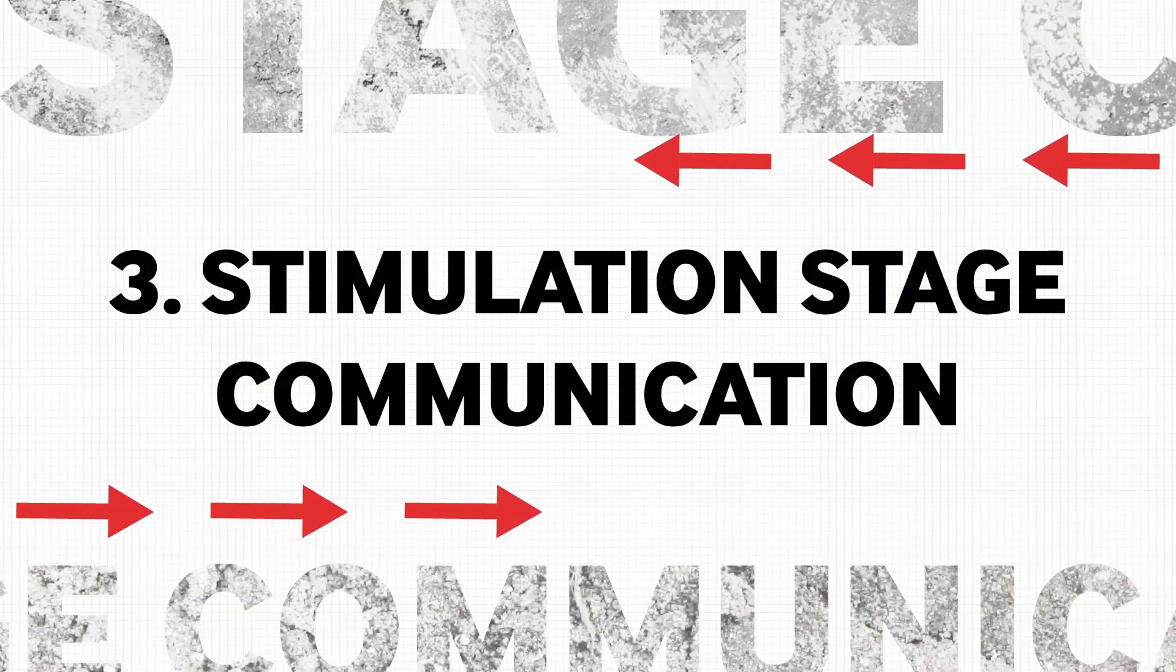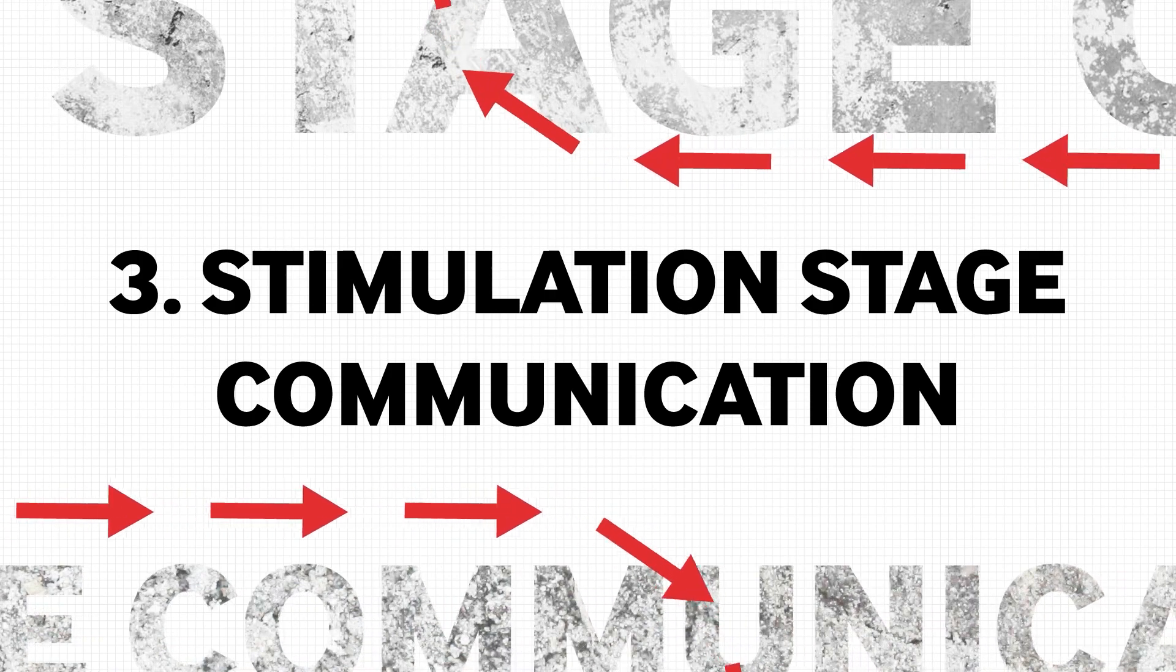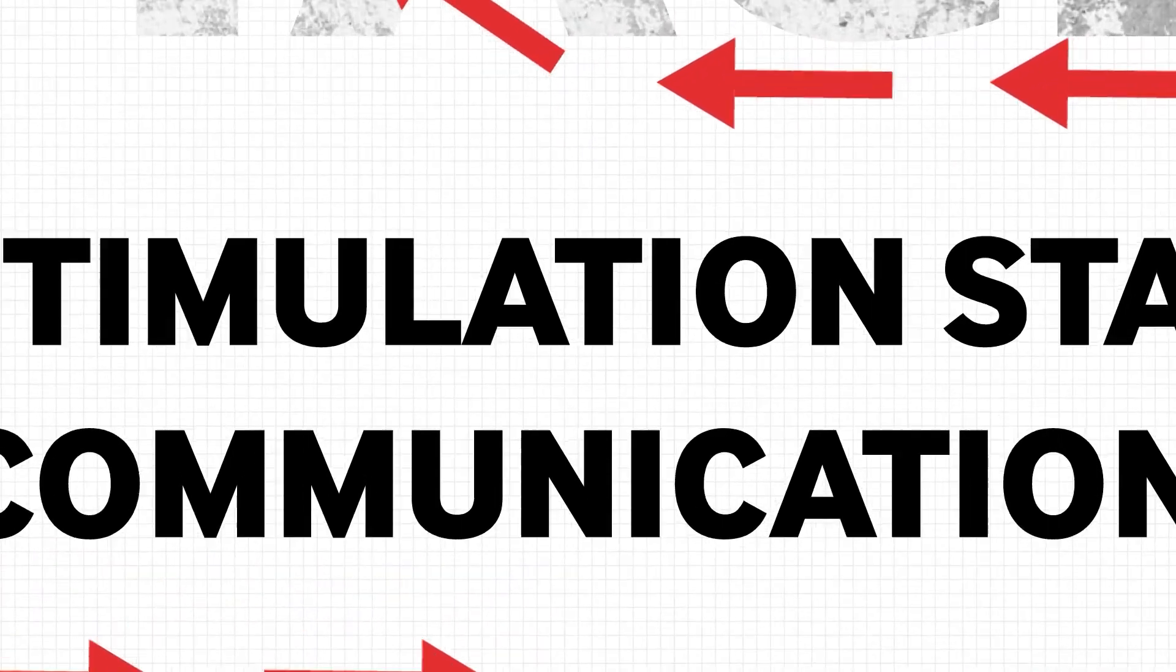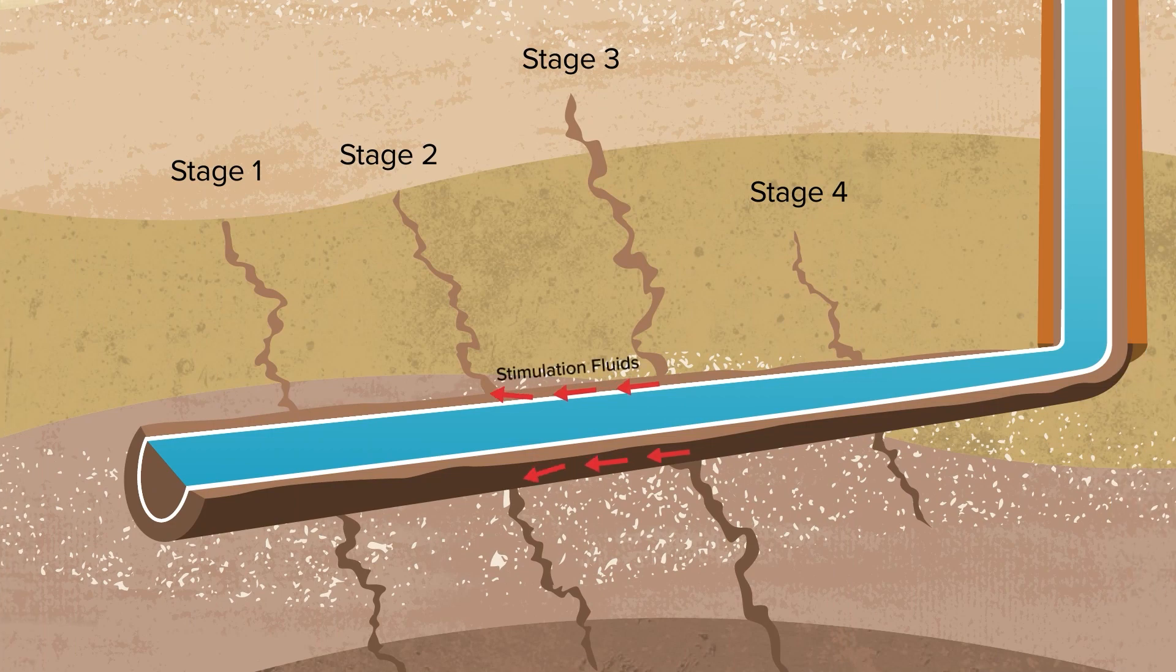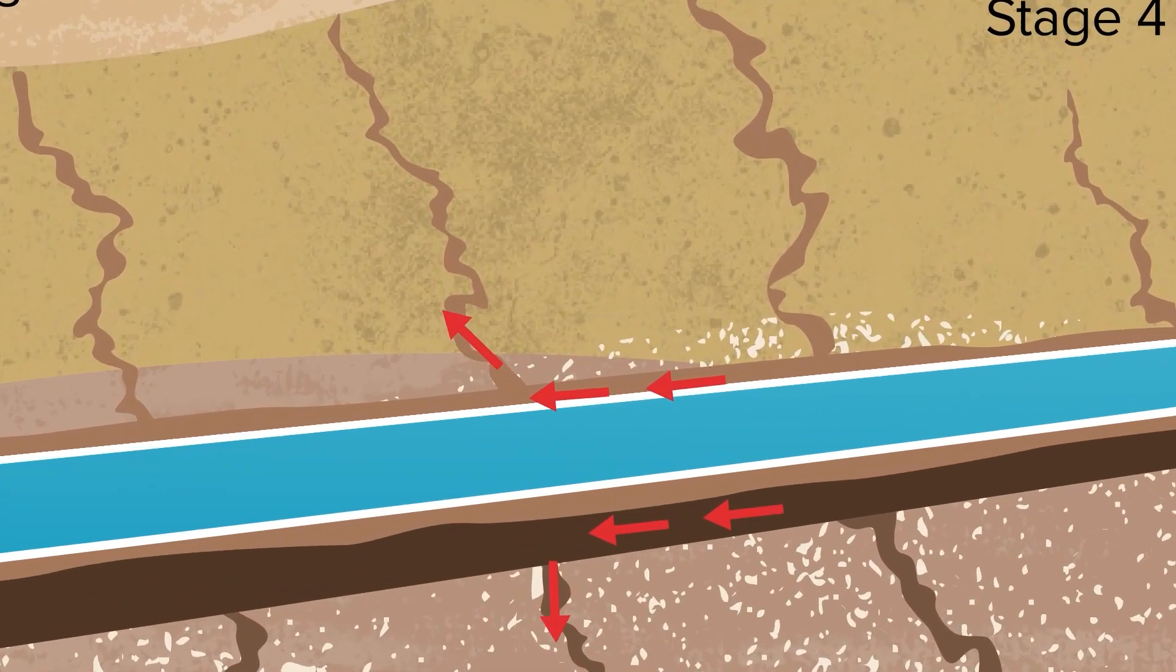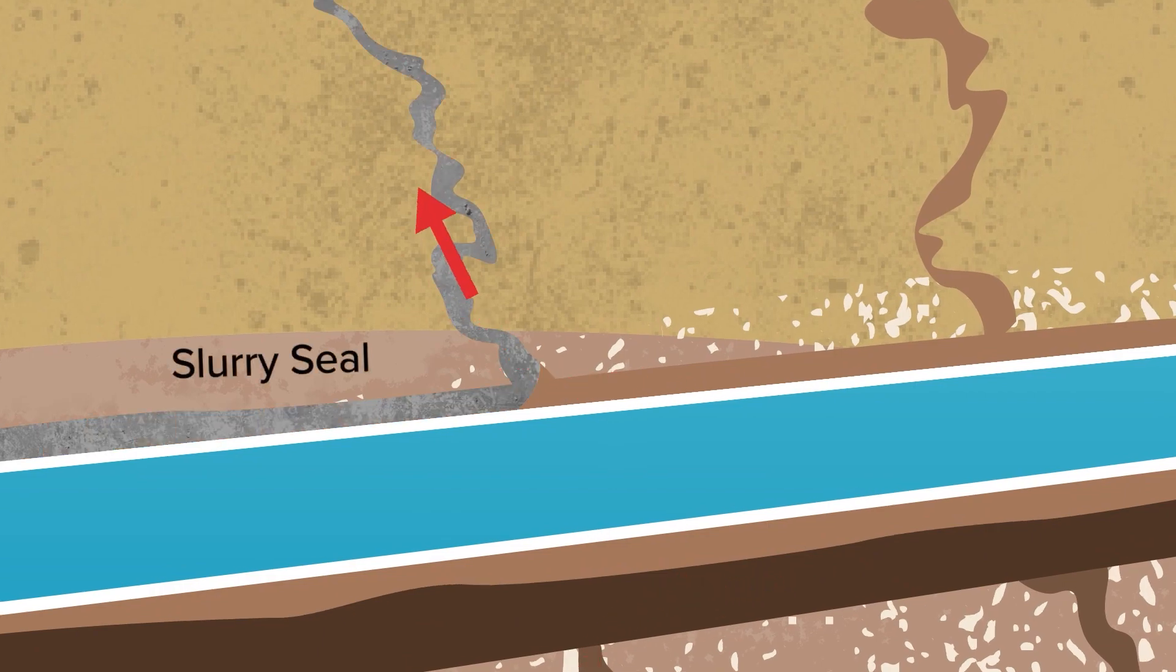Stage communication during stimulation describes when stimulation fluids travel to a prior stage. Prevention methods include spacer fluids that are compatible with both the mud and cement, and a high-performance slurry to seal gaps in the annulus.